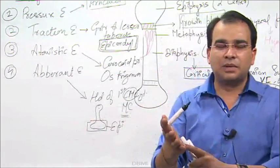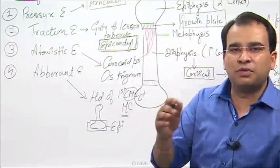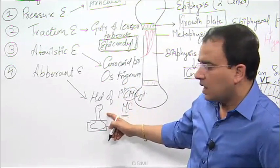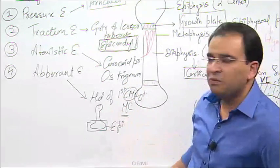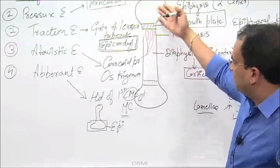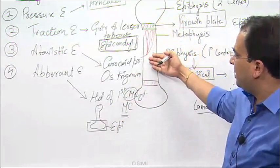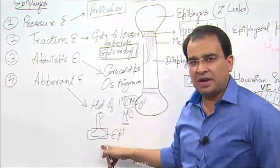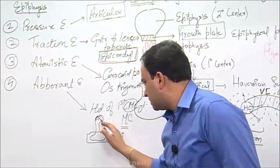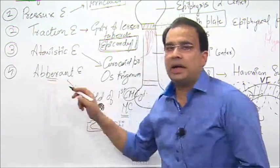All metacarpals are examples of miniature long bones. We have long bones, short bones, flat bones, pneumatic bones — so many kinds. All metacarpals and metatarsals are miniature long bones. These miniature long bones do not have two epiphyses like normal long bones such as radius, humerus, and ulna, which have a diaphysis and two epiphyses. Here we have only one epiphysis and that is close to the base. So if there is an additional epiphysis present toward the head region, that will be an aberrant epiphysis.